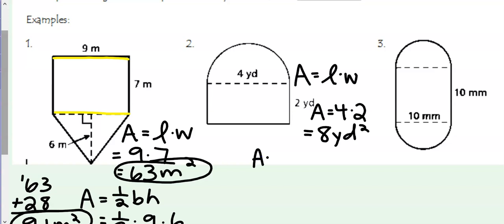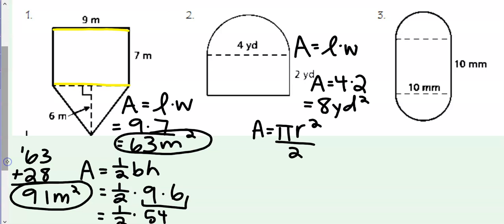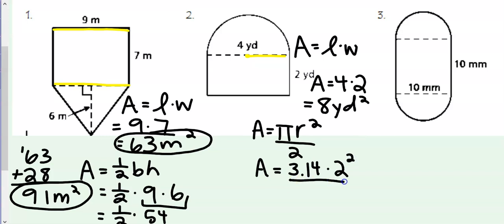The formula of a circle is area equals pi r squared, but since we have a semicircle, we have to divide that by 2. Pi is always 3.14. Our radius — remember, radius only goes halfway through the circle — which means our radius is 2 because it's half of 4, and then we want to square that number. At the end we will divide by 2, so 2 squared is 4.